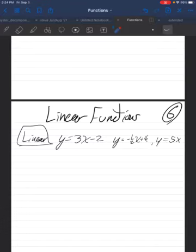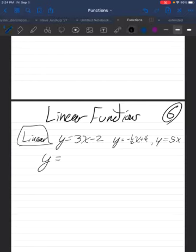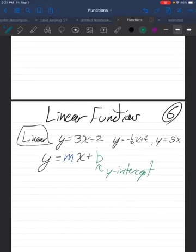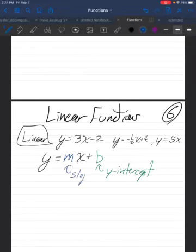The general format is y equals one number times x, which we'll usually call an m, and which I'm going to use blue for, plus another number, which we'll call b. And the name for that number b is the y-intercept, and the name for the number m is the slope.